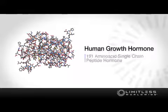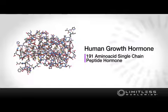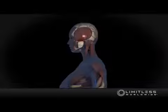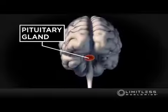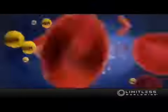Human growth hormone is a 191 amino acid single-chain peptide hormone. It's manufactured deep within the brain, in the pituitary gland, where it's released into the bloodstream and travels throughout the body.